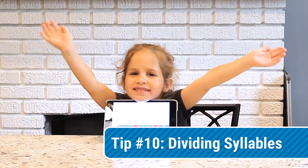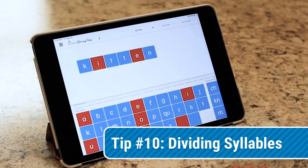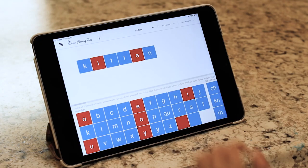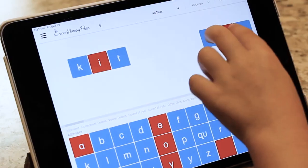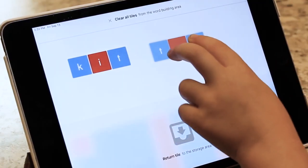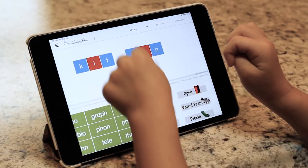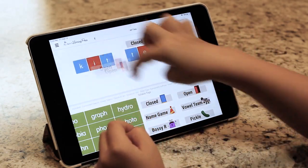It's time to divide syllables. You can divide any word you build by touching the two tiles where you want the split. Then drag outwards. You can move these parts with the tip we covered earlier by using two fingers and dragging. Now go ahead and label them.